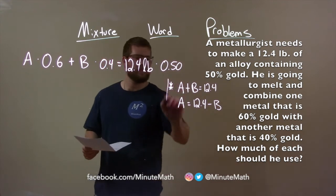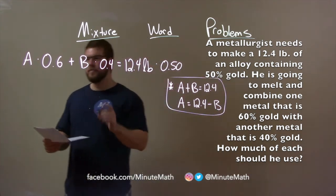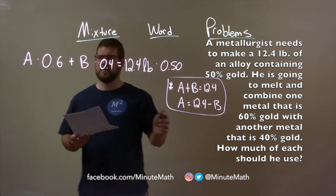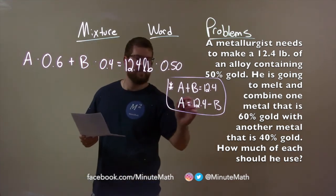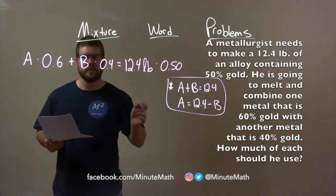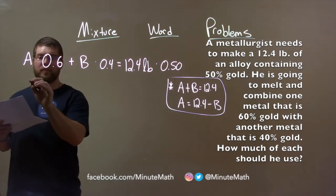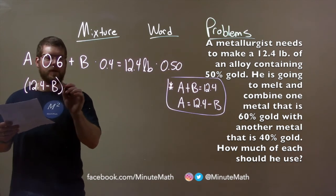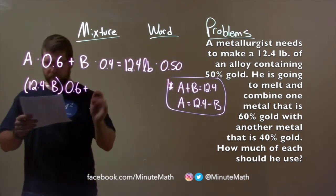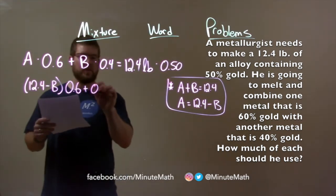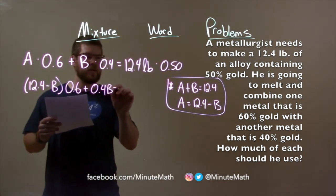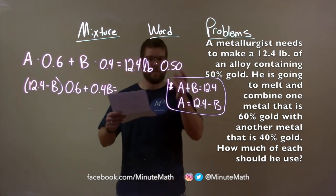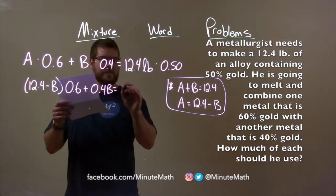Let's first simplify that first equation as much as we can. We're going to put this in that same step. We know A is 12.4 minus B. So, instead of A, I have 12.4 minus B times that 0.6 here, plus 0.4B. I'm just rearranging that. And 12.4 pounds times 50 percent of that, 0.5 is 6.2.